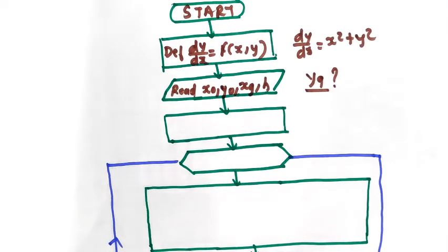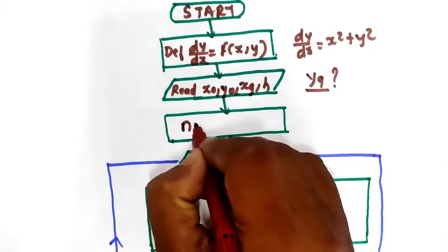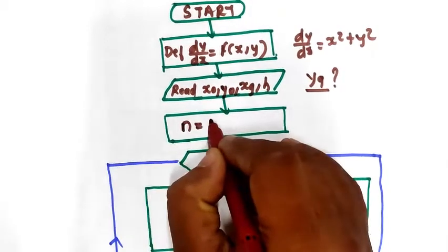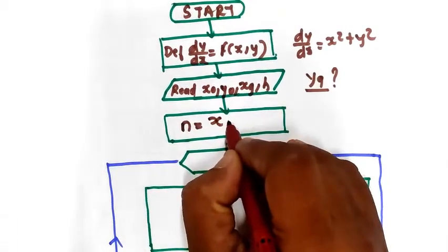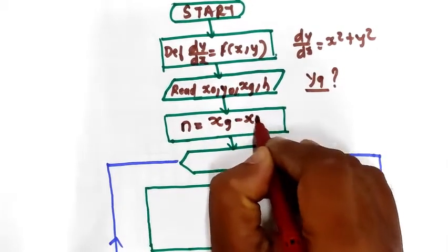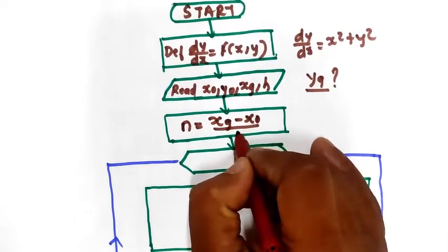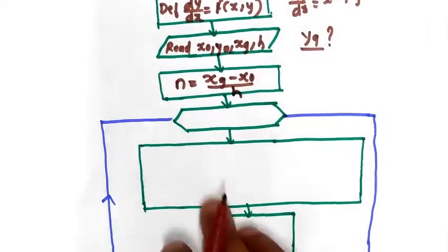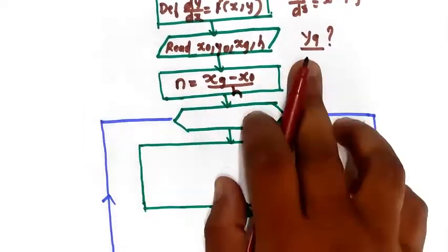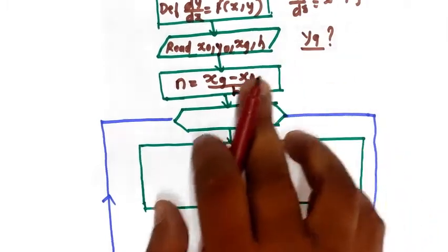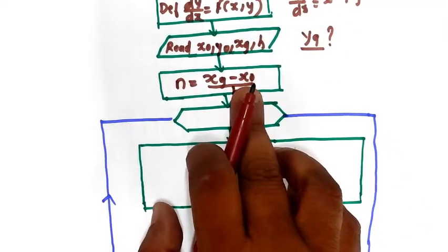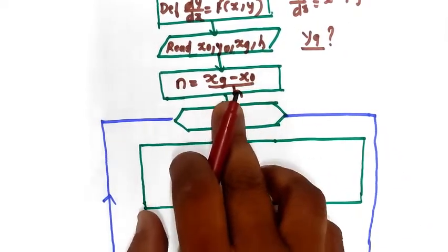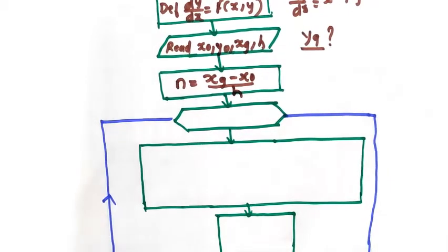The next step is to calculate the required number of iterations. The formula is n equal to xg minus x0 divided by h. Here, xg is the target value for which yg is to be found out, x0 is the initial value, and h is the step size.